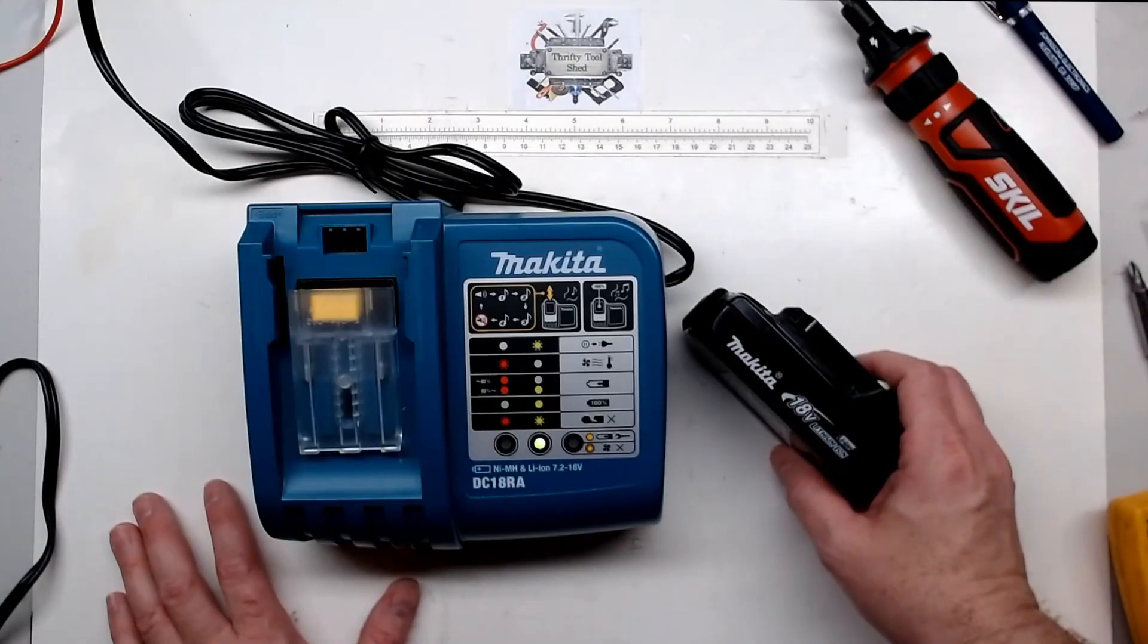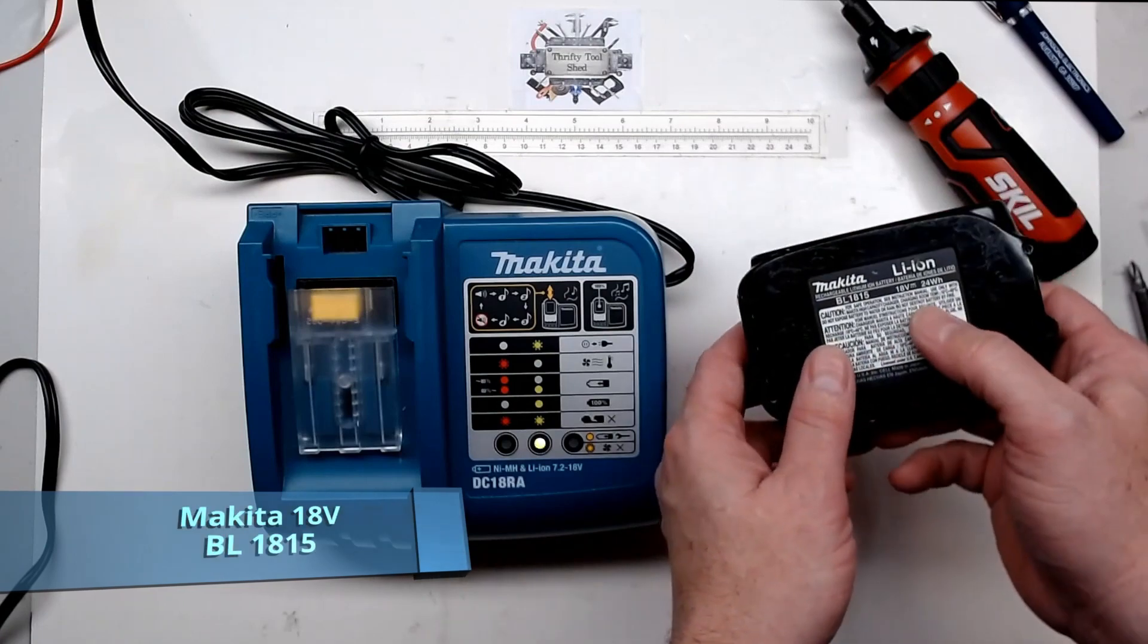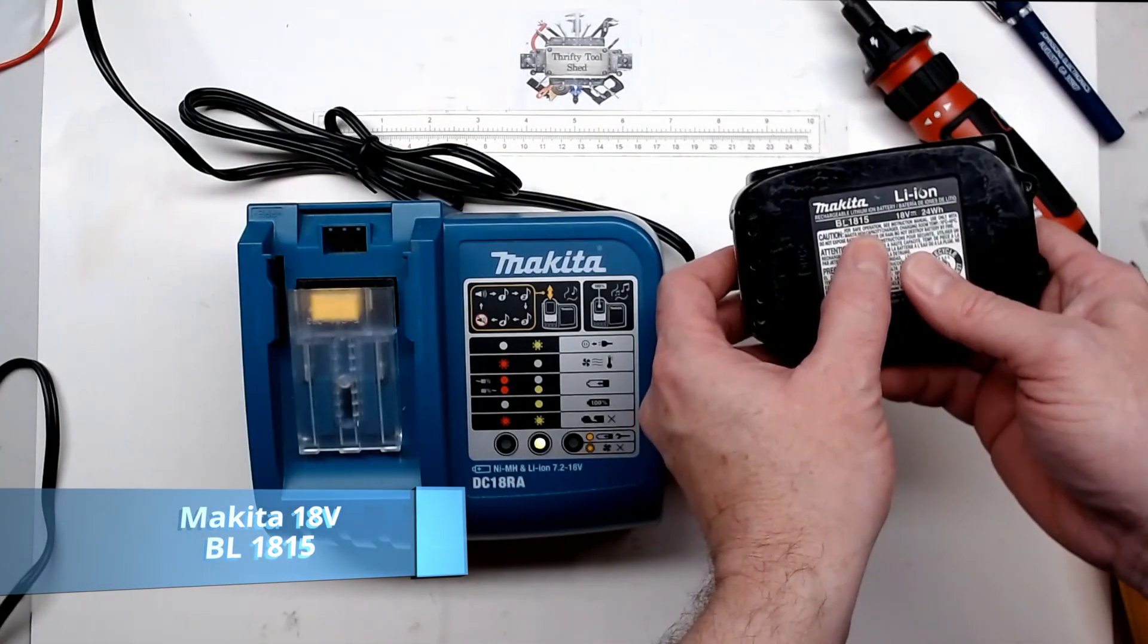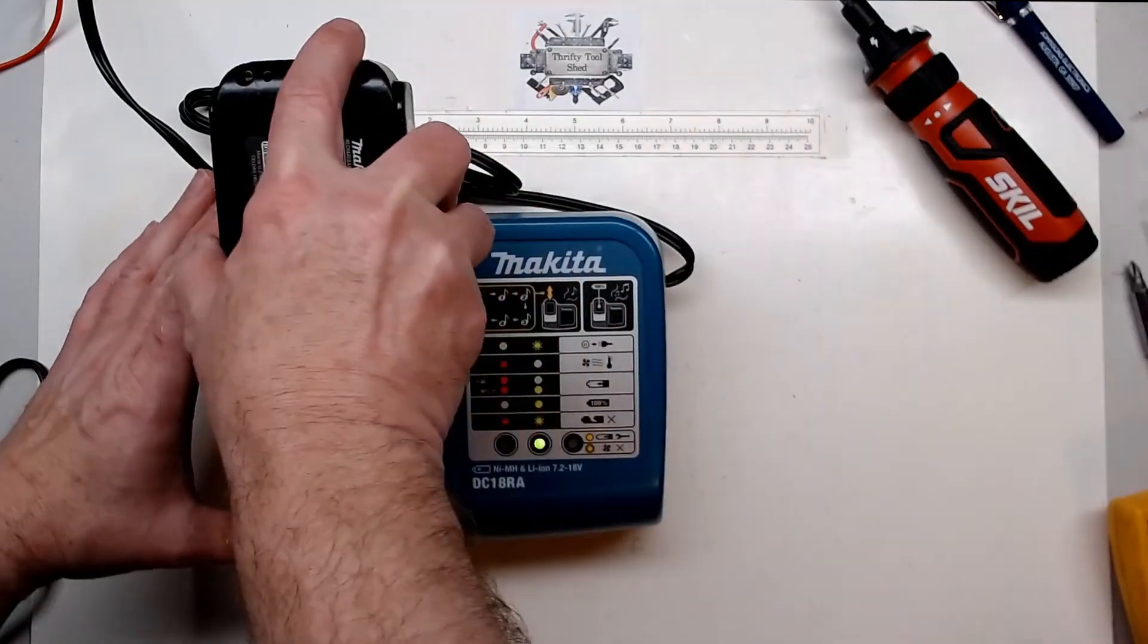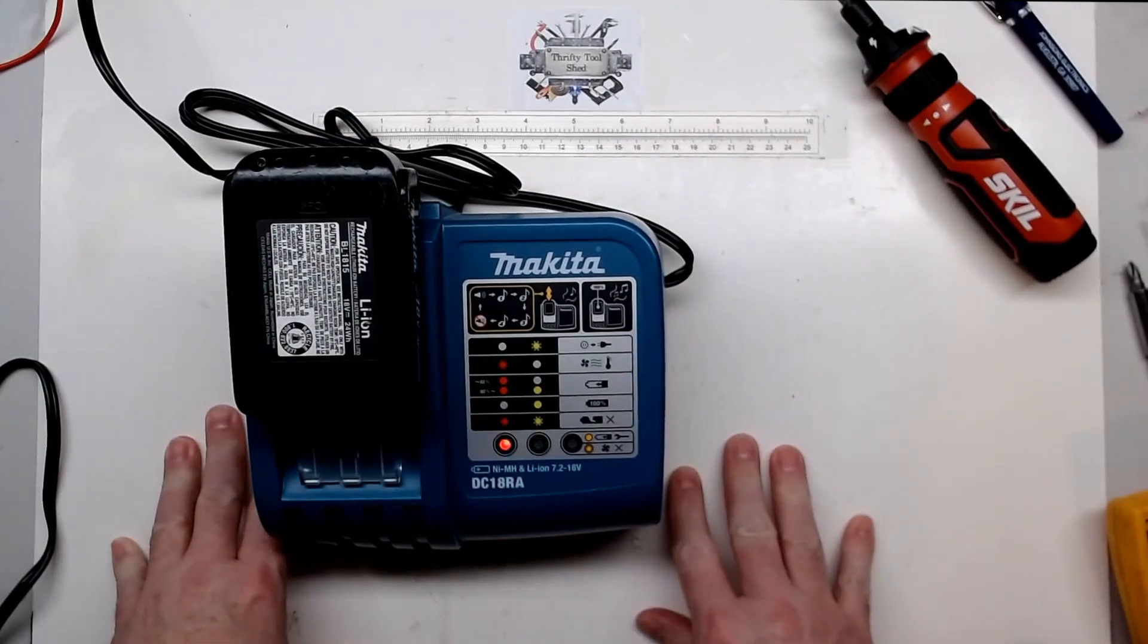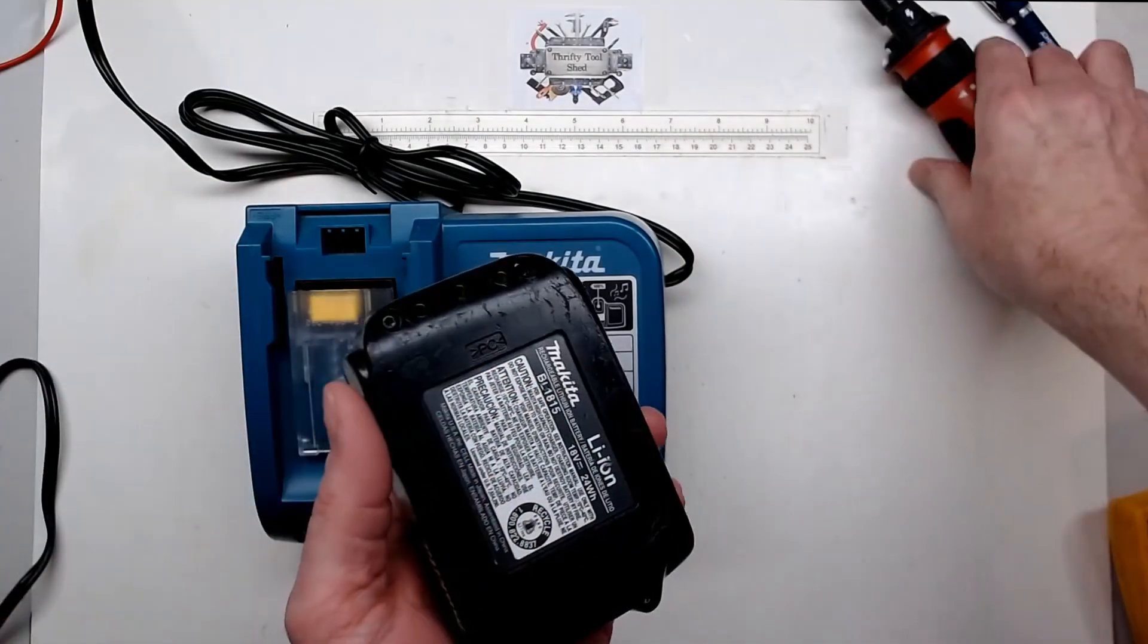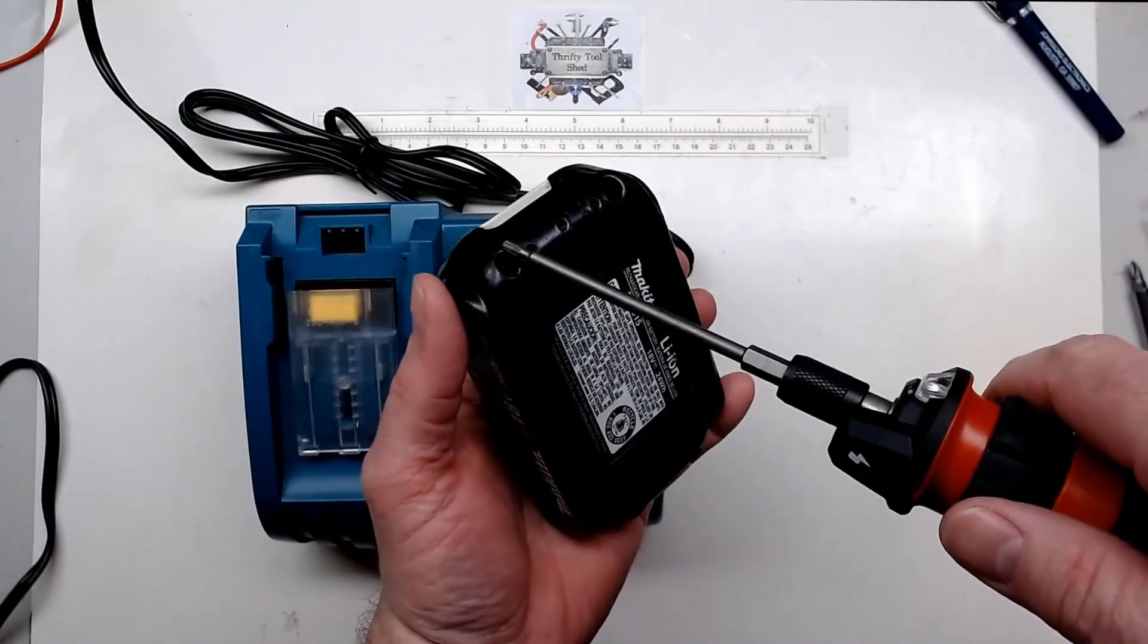Today I thought we'd take a look at the Makita 18-volt lithium packs. This is a BL1815 and this pack gives an error or fault when it's charging. I just thought we'd take this pack apart and look inside. I've already got two of the T10 security screws out.